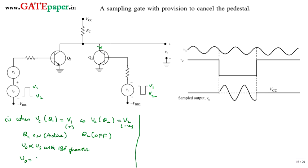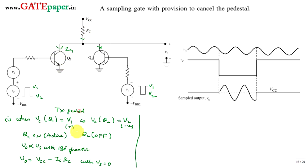V0 is equal to Vcc minus ic1 times Rc, where ic1 is the current flowing in the active region from Vcc through Rc towards the collector of Q1. When Vs equals zero, this is the output during the transmission period. During transmission, the output is Vcc minus ic1·Rc; when a signal is applied, that signal superimposes on this voltage in the active region.